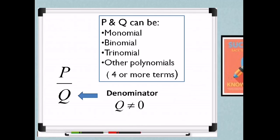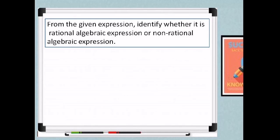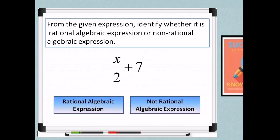So by the definition given, let's have your activity. Get your pen and paper to answer our activity today entitled 'Where Do I Belong?' From the given expressions below, identify whether it is a rational algebraic expression or a non-rational algebraic expression. I will be giving you time to answer. First expression: x over 2 plus 7. Is it a rational algebraic expression or not?